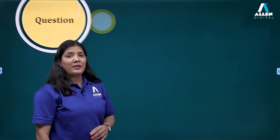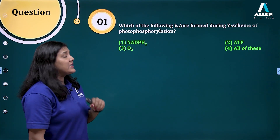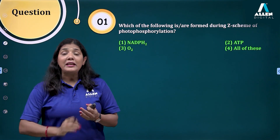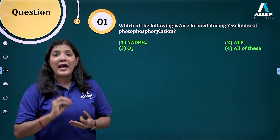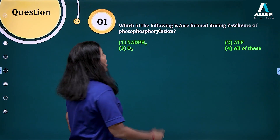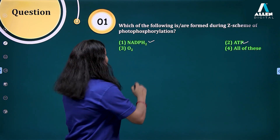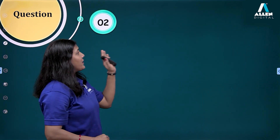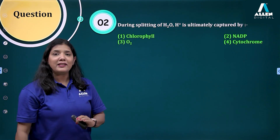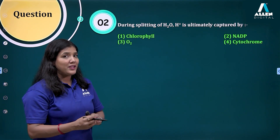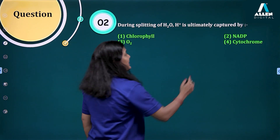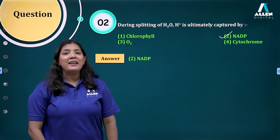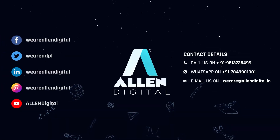Let us now solve some questions. Which of the following are formed by the Z scheme of photophosphorylation? Non-cyclic photophosphorylation is also called the Z scheme. During this, there is splitting of water so oxygen is released, ATP is formed, and NADPH2 is formed — so the answer is all of these: NADPH2, ATP, and one molecule of oxygen. Next question: during splitting of water, H+ is ultimately captured by NADP+ to form NADPH. So the answer is NADP+. This is all about the light reaction.